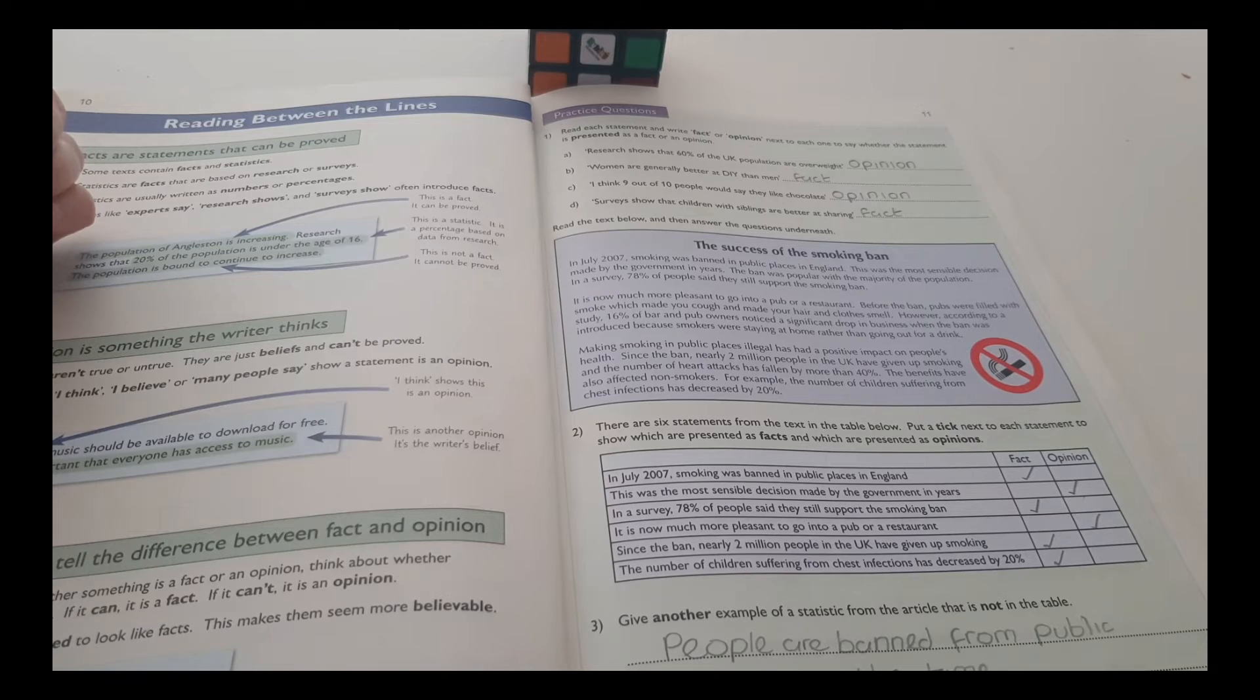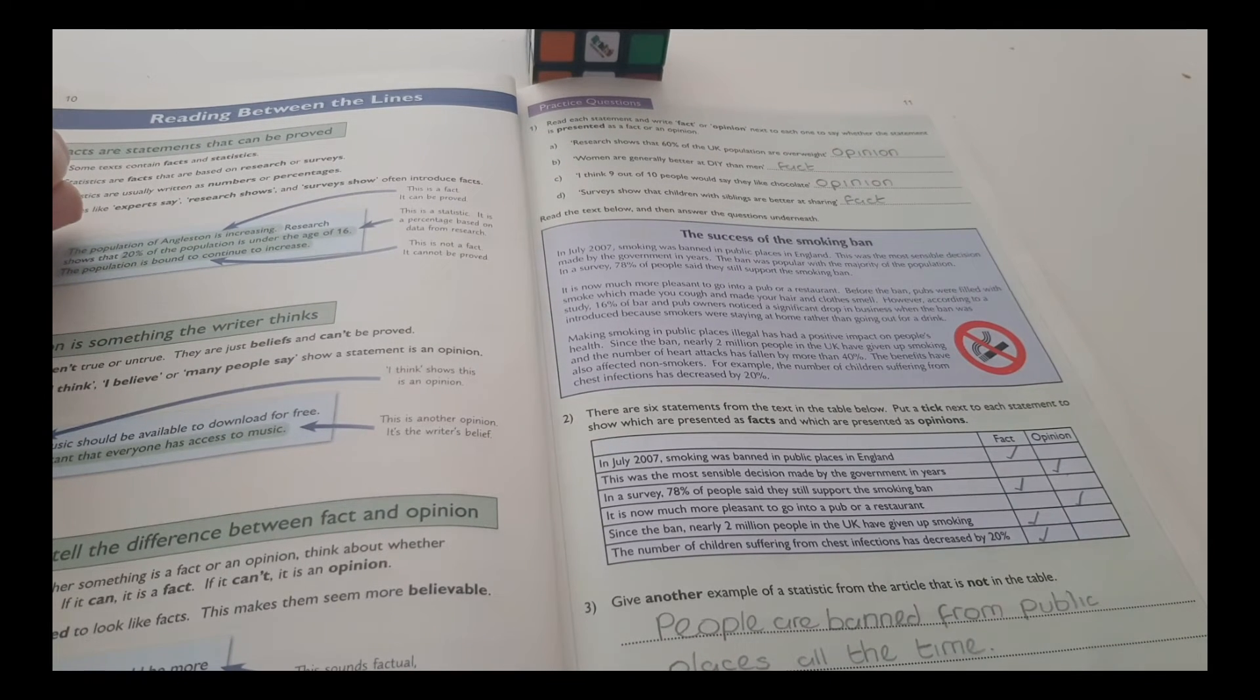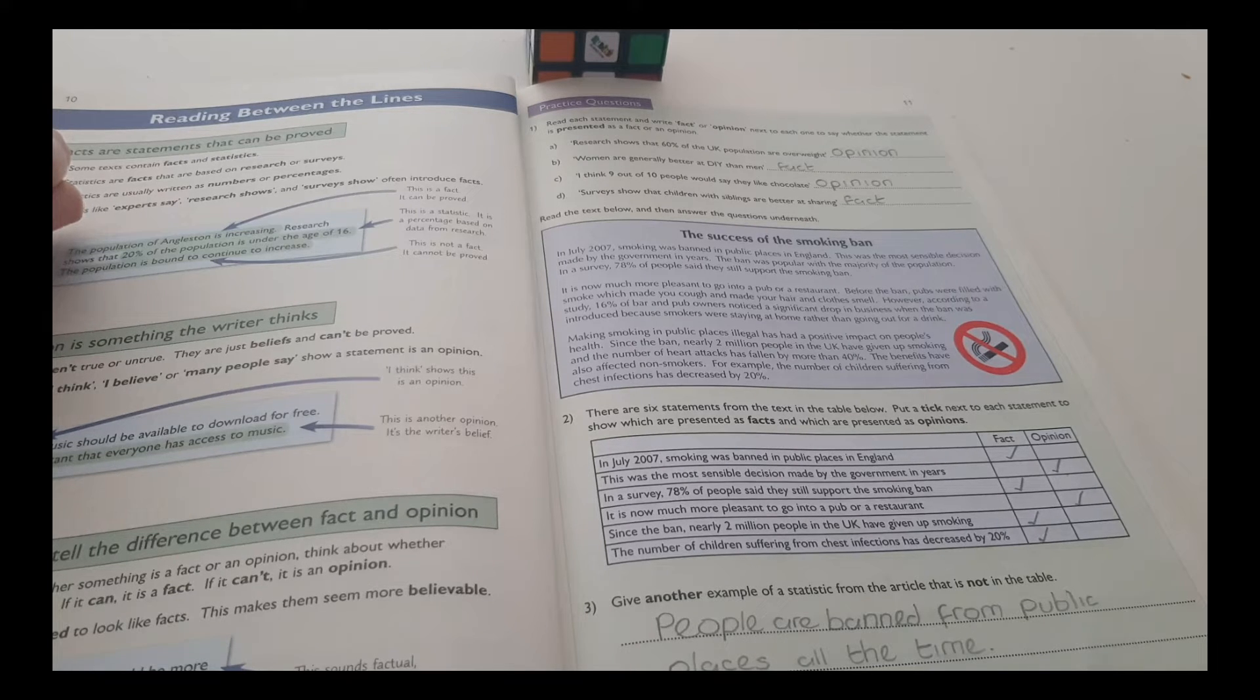Making smoking in public places illegal has had a positive impact on people's health. Since the ban, nearly 2 million people in the UK have given up smoking and the number of heart attacks has fallen by more than 40%. The benefits have also affected non-smokers. For example, the number of children suffering from chest infections has decreased by 20%.